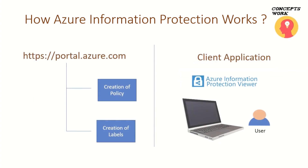The first configuration has to be done on the Azure portal — that means the configuration for AIP as a service. This includes creation of policies and creation of labels. The label as an entity object actually exists on portal.azure.com. You will use portal.azure.com to customize all the settings related to labels, and then you will add multiple labels to one policy and assign that policy to a specific group of users. Once the policy is assigned to a user, the user has to install the Azure Information Protection client on their machine. Once that client is installed, the user will start getting a label bar within the application.